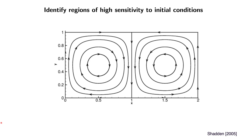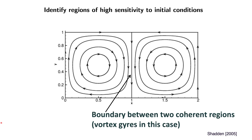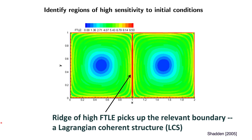A quick example of a simple flow — this is a double gyre flow. If we calculate the forward time finite time Lyapunov exponent, we should extract significant features. In this case, we would expect the boundary between these two coherent regions — vortex gyres. We show the ridge of high FTLE indeed does pick up that relevant boundary.